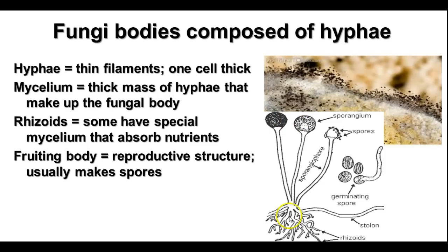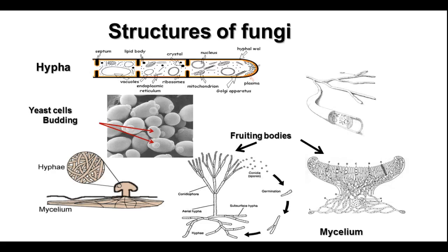In bread mold, you have rhizoids — root-like structures that embed into the substrate — and a special kind of mycelium that absorbs nutrients. There are also reproductive structures called fruiting bodies that usually make spores, and there are different kinds depending on the group of fungi. Here is a single hyphae strand. Notice the septum, which is the incomplete cell wall separating the cells — several cells shown here are not completely separated from each other.